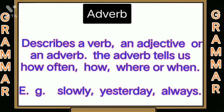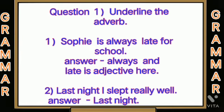Adverb describes a verb, an adjective, or an adverb. The adverb tells us how, how often, where, or when. Examples: slowly, yesterday, always. Question one: underline the adverb. First — 'Sophie is always late for school.' Answer: always. Note: 'late' is an adjective. Second — 'Last night I slept really well.' Answer: last night.